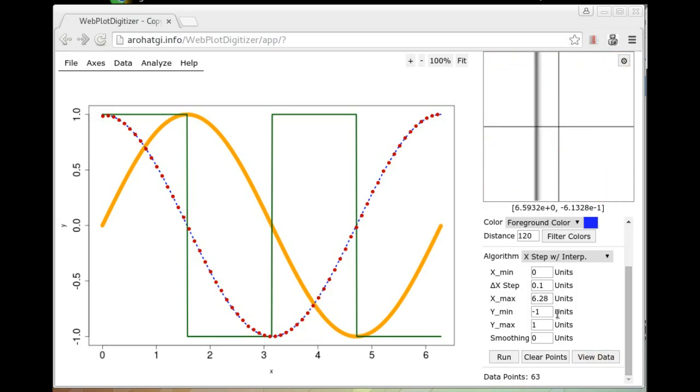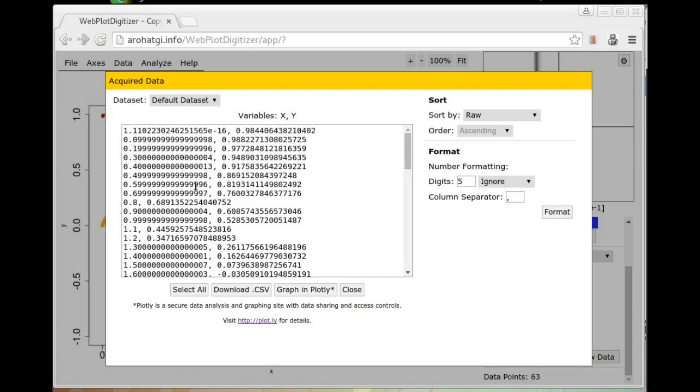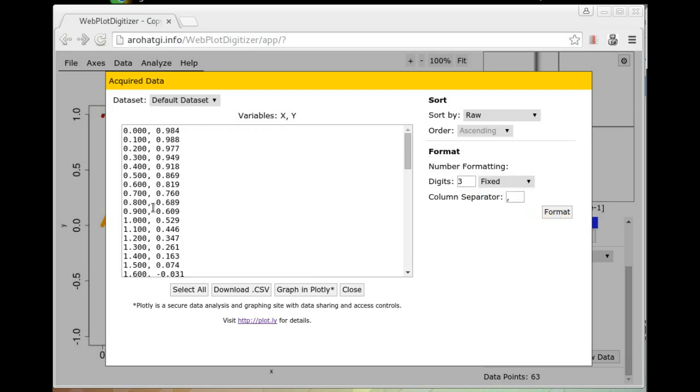Once you're satisfied with the data points, click on the view data button to view the data points. Here there are some controls available to change the formatting of these numbers. You can also change the column separator in between these two columns. For example, you can use backslash T to enter a tab or you can go back to comma for a comma separated values file. You can also sort this data by X, Y, or the connectivity of these points. The nearest neighbor data point is useful if you want to sort the data along a curve. For example, for a circular path, the sorting data by X or Y axis does not make much sense. And you might want to follow the curve and choose the next nearest neighbor after every data point. So just select the nearest neighbor option in that case.